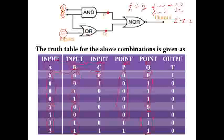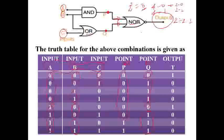The final output uses a NOR gate, with inputs P and Q. In the NOR gate, output is 1 only when both inputs are 0 (the inverse of OR). Checking P and Q values row by row: row 1 both P and Q are 0 → output 1. In all other rows at least one of P or Q is 1 → output 0. Final output: 1, 0, 0, 0, 0, 0, 0, 0.